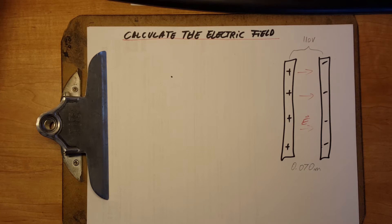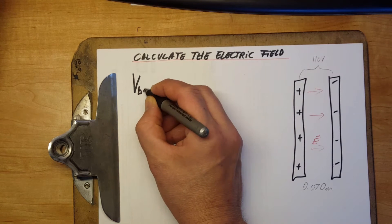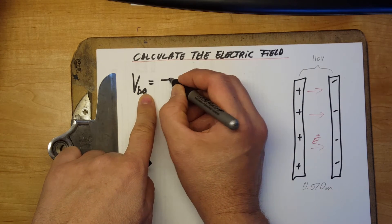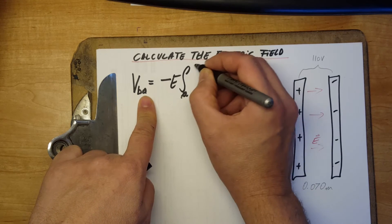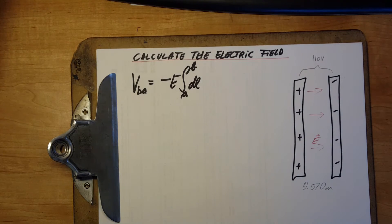So, the formula that we're gonna rely on is gonna be this. VBA equals negative of E integral from A to B dl. This is the general formula.